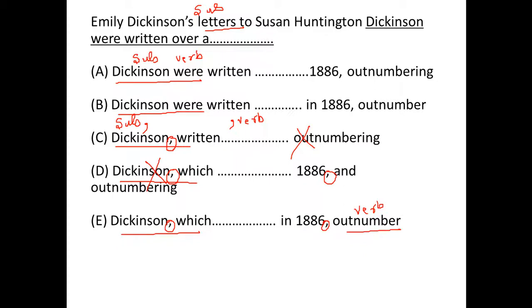Now, if you look at the last words of A, B and E. In A it says comma outnumbering. When you have comma followed by verb-ing, and before the comma we have a clause - clause means we have subject plus verb - whenever we have this construction this is cause and effect structure. This verb is the cause and verb-ing is the effect of that cause.